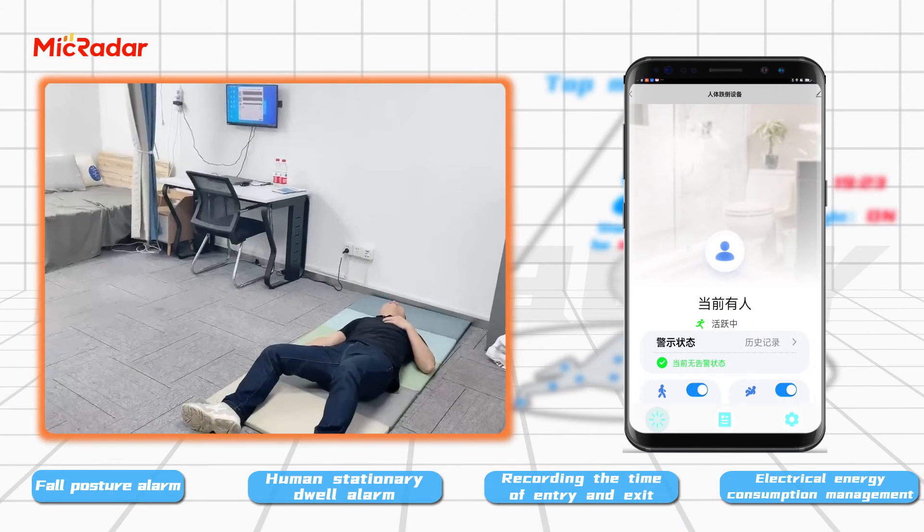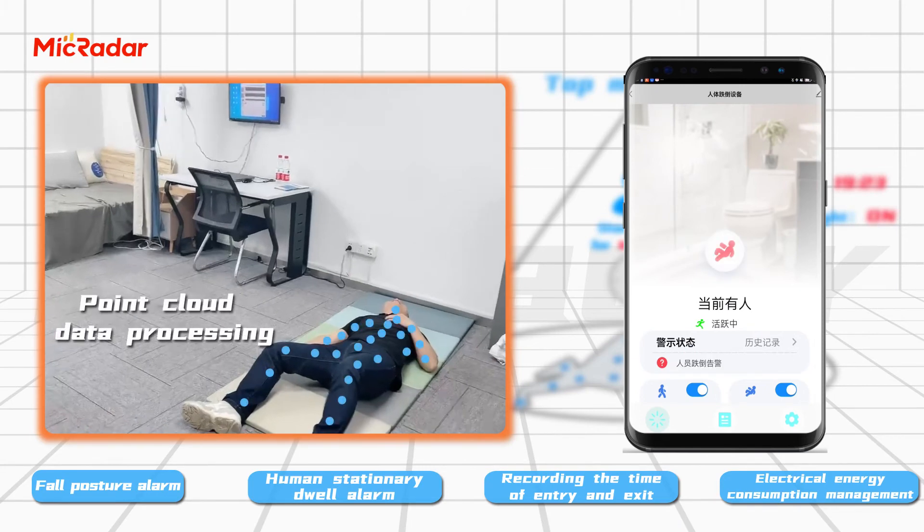When a person falls, the radar will process the point cloud data, regardless of any fall speed and fall direction. As long as the human falls and abnormally dwells, the radar can accurately alarm.